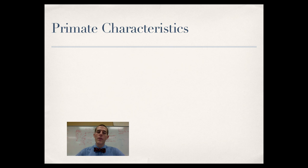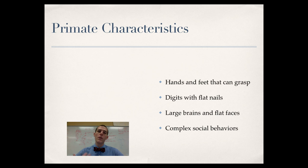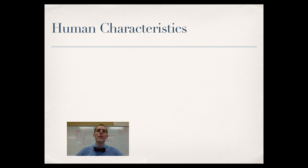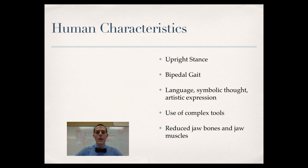Just a step above mammals are the primates — obviously mammals, but with grasping hands and feet with opposable thumbs, digits with flat nails, large brains, flat faces, and complex social behaviors. This includes most monkeys and lemurs. Finally, we get to humans. Our unique characteristics are an upright stance and bipedal gait — we walk on two feet. Language, symbolic thought, and artistic expression set us apart, along with complex tool use, and reduced jawbone and jaw muscles giving us the flat face characteristic of humans.